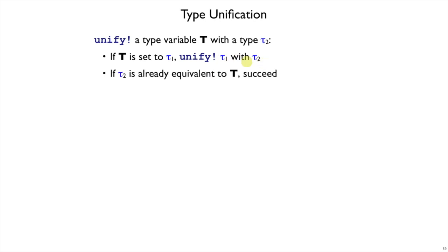On the other hand, if T is not already set, it could be that tau2 is exactly T. In that case, if we just get unify of T and T, well yes, that works. There's no new information there, but there's also no problem, so it can just succeed.